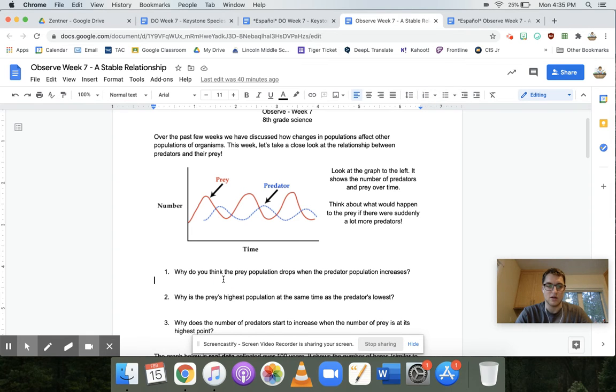So the first one here, why do you think the prey population drops when the predator population increases? I'll give you an answer right off the bat here. So just to get you the kickstart here. So think about it for a second. Pause the video if you need to. Open up your assignment and type it in.